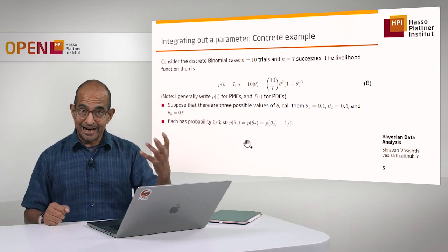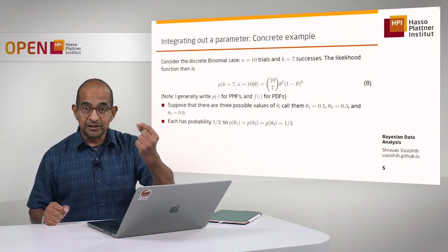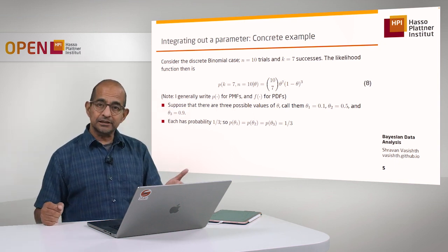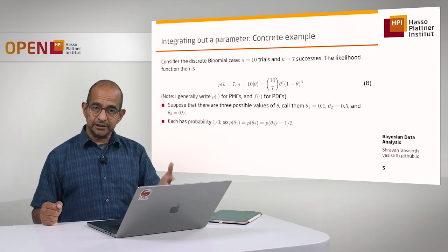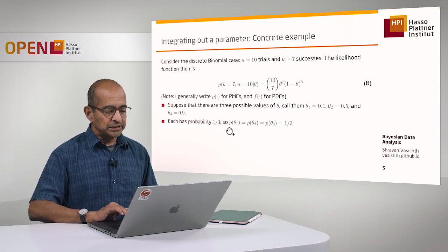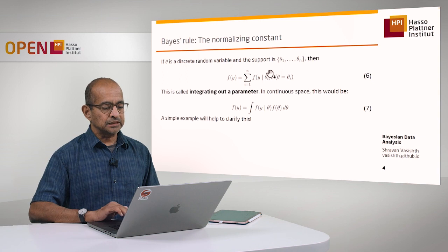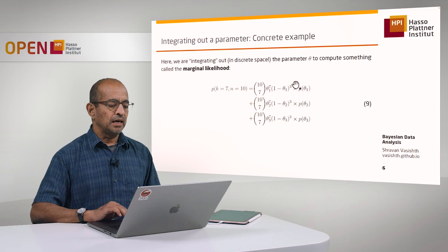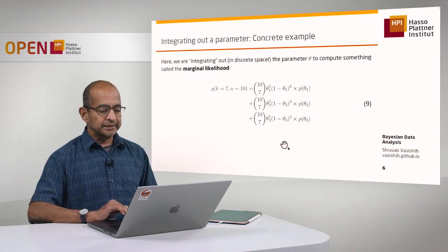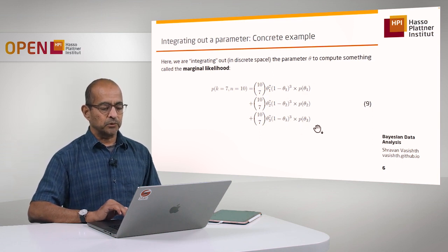What I've done here is something radical: I'm thinking of the parameter theta in the binomial as a random variable — it has a probability mass function. This is a discrete distribution on theta. I've got the probabilities for each of the three possible outcomes 0.1, 0.5, 0.9, and I'm just going to implement this rule: multiply the likelihood with the probability of each of the possible values of theta. And lo and behold, what I get is a summation over theta 1, theta 2, theta 3 with the probabilities multiplied for each.